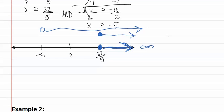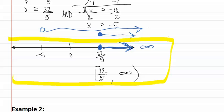Let's write this in interval notation. We start with a bracket because it is a closed dot. We have 32 fifths comma positive infinity parenthesis, and this is our answer.